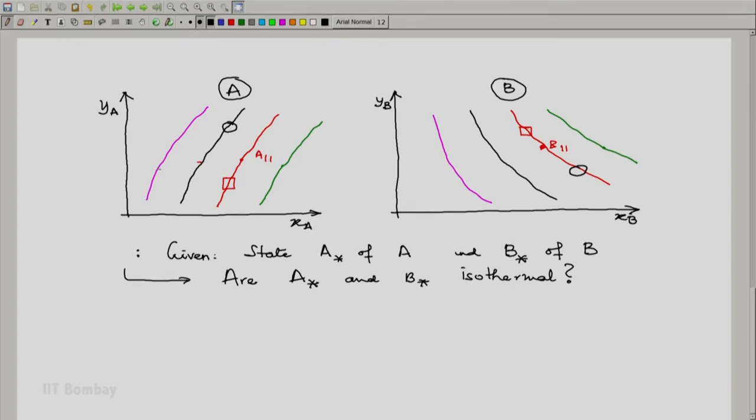Corresponding pair of violet or pink isotherm, pair of black isotherms, red isotherms and green isotherm. The green isotherm in the state space of A corresponds to the green isotherm in the state space of B and so on.